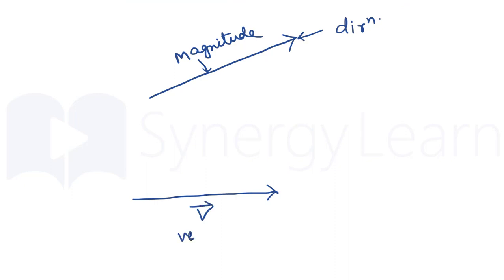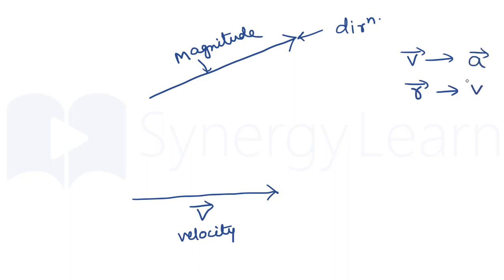Say we have a vector V. All of us know that velocity is changed by acceleration, or position is changed by velocity. That is, if we have a change in velocity, the quantity responsible is acceleration, and when we have a change in position, the quantity responsible is velocity.